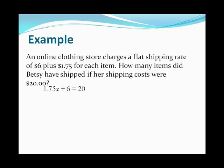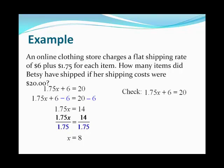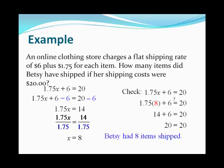We have an equation with a multiplication and an addition. We deal with the addition first by subtracting 6 from both sides. 20 - 6 = 14. Now we have a multiplication equation. We solve for that by dividing by 1.75 on both sides, and we see x = 8. We check our solution by putting 8 in for x. After working that out, we get 20 = 20, which means our solution of x = 8 was correct. That is how many items Betsy had shipped.